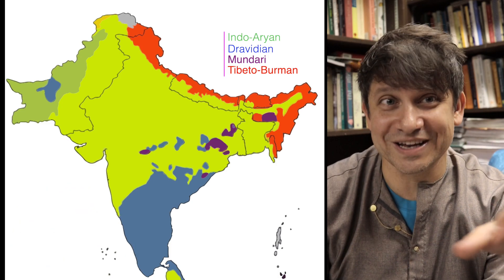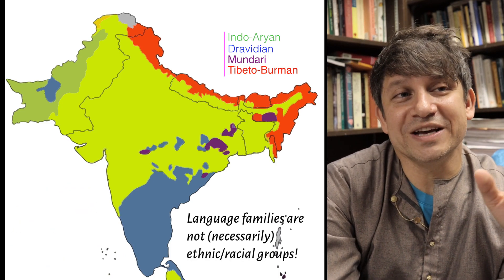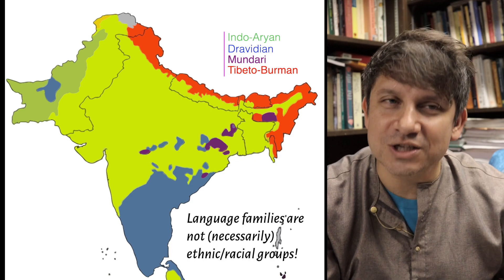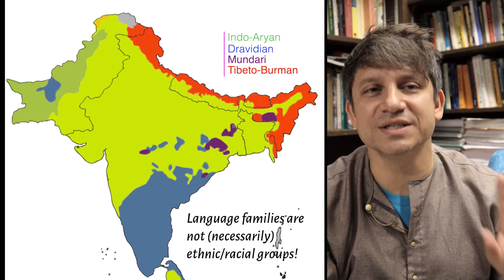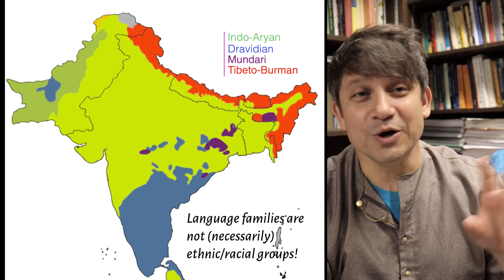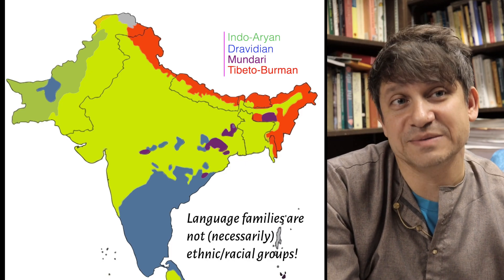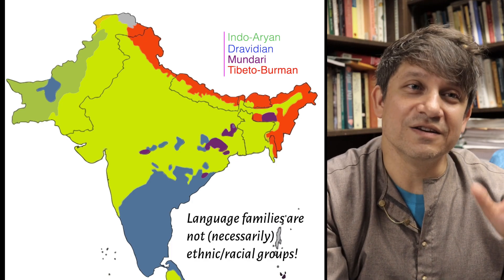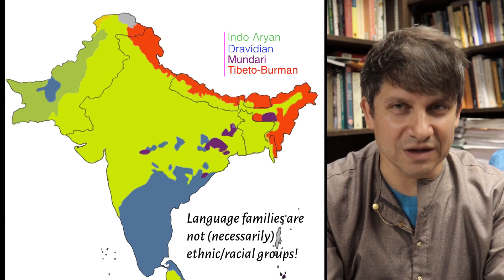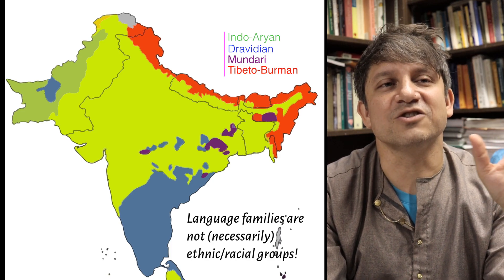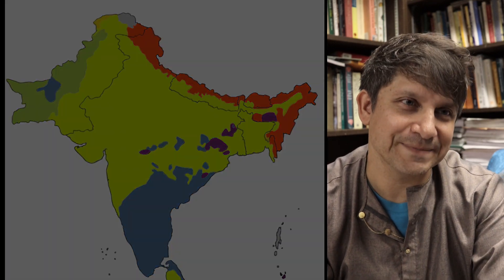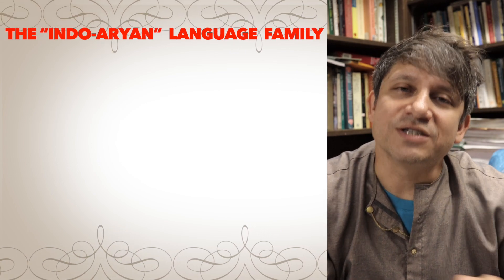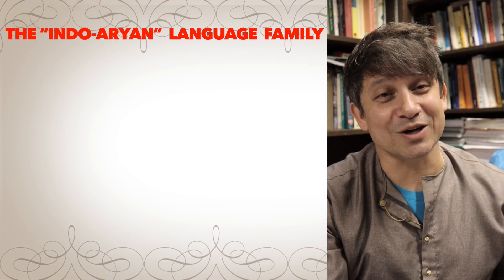Before examining each family, it's important to emphasize again that they're not necessarily connected to ethnicity. There are no biological differences between speakers of the four language families, although we can sometimes discern cultural differences between, say, north and south Indians. Biologically, there has always been plenty of intermixture between speakers of these languages — these are languages, not races. Let's start with the biggest family: Indo-Aryan.